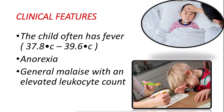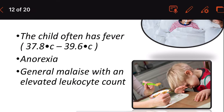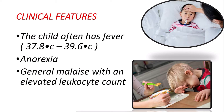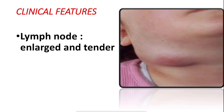The clinical features of acute cervical lymphadenitis: the child often has fever of 37.8°C to 39.6°C, general malaise with discomfort, and an elevated leukocyte count. There is also anorexia — an eating disorder where there is marked or reduced appetite and aversion to food. The lymph node is going to be enlarged and tender.